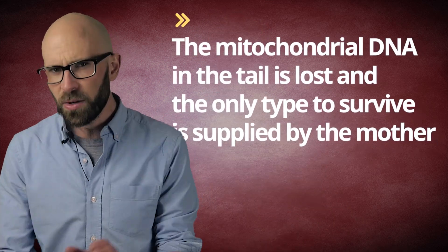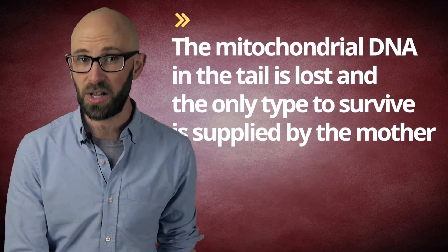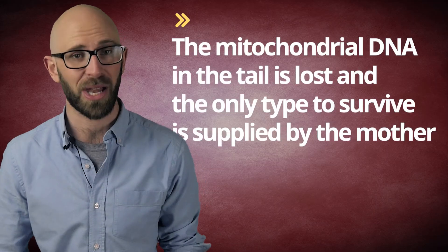Sperm have only a few mitochondria, and thus mitochondrial DNA in their tails. They use them to power their quest to the egg. As sperm enters the egg, only the chromosomes found in the head of the sperm are preserved and used in the recombination process to create new cells. This is because the rest of the sperm cell is broken down by enzymes within the egg. So the mitochondrial DNA in the tail is lost and the only type to survive is supplied by the mother.